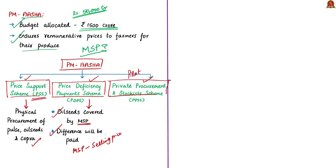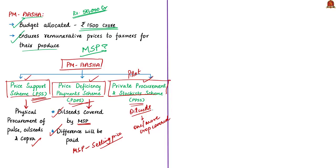All payments under PDPS will be done directly into the registered bank account of the farmer — this scheme does not involve physical procurement of crops, as farmers are paid the difference between MSP and the sale price. The Private Procurement Stockist Scheme (PPSS) was rolled out on a pilot basis for oil seeds. It involves the participation of private stock in a pilot district or selected APMC sub-district, covering one or more oil seed crops for which MSP is notified. Since this is similar to the PSS involving physical procurement, the PPSS shall substitute the PSS or PDPS in pilot districts. The selected private agency shall procure the commodity at MSP in notified markets during the notified period from registered farmers. We will see a more detailed analysis of PM ASHA in the coming days.